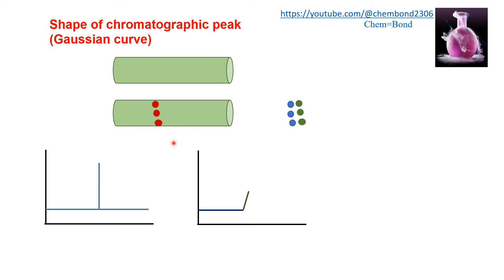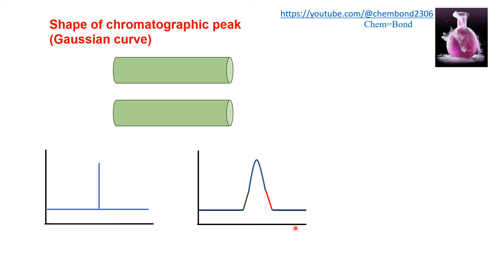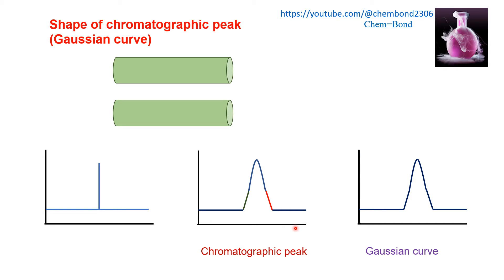Other molecules — most of them — travel with average velocity and then elute, producing the second portion of the peak. Some molecules lag behind and get eluted later, producing the third portion. So this diagram has three regions: green, blue, and red, eluted at different times. This shape of the chromatographic peak resembles a Gaussian curve.